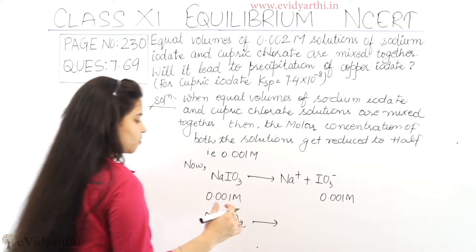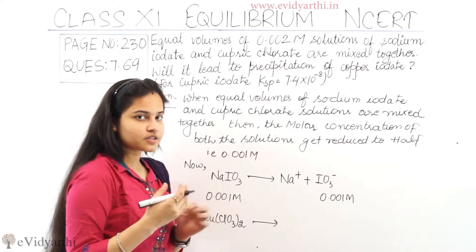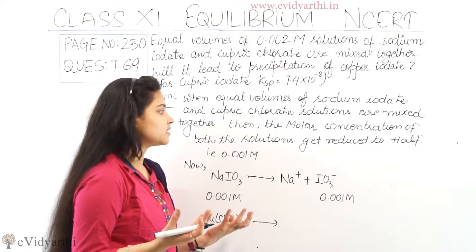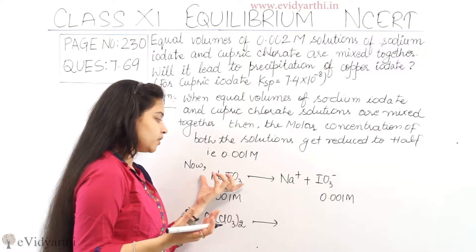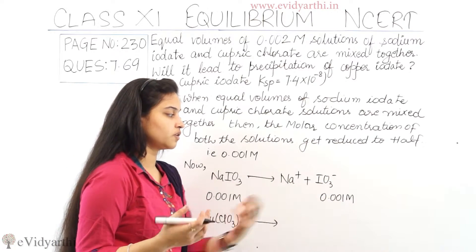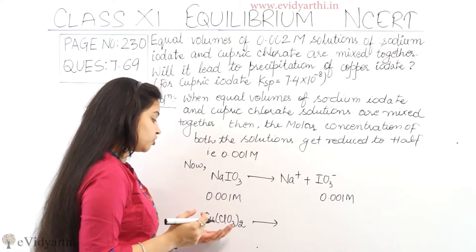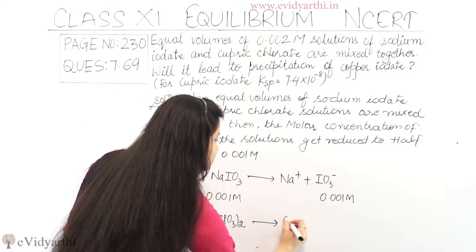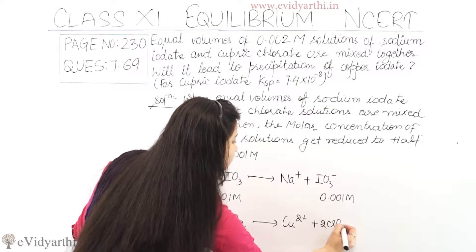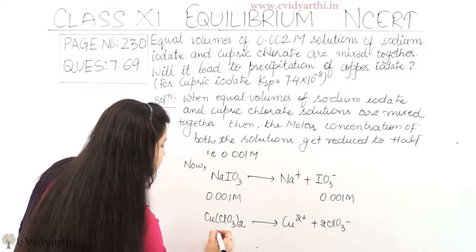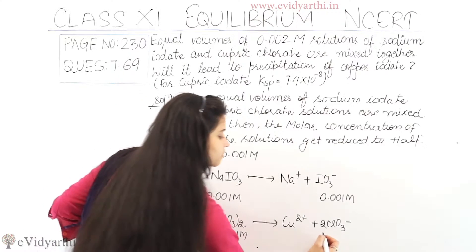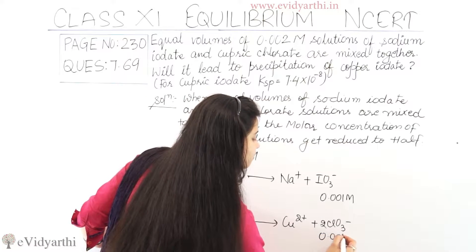Same is the case with cupric chlorate, Cu(ClO₃)₂. When these solutions mix together, cupric chlorate releases Cu²⁺ plus 2ClO₃⁻. The concentration of these ions is also 0.001 molar.